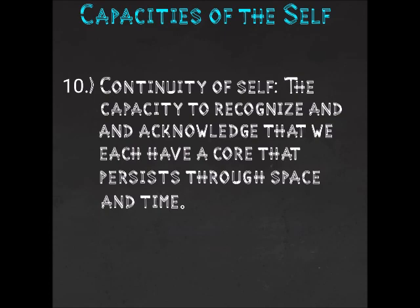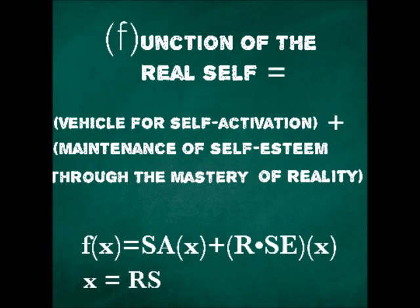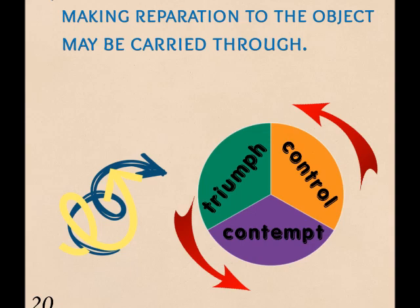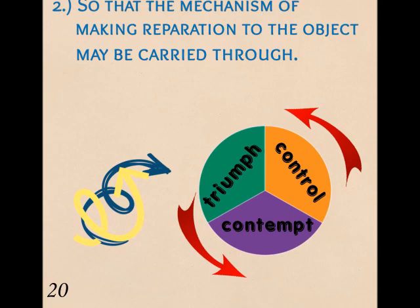Because the narcissist or borderline is neither whole nor autonomous, and developmentally arrested, the capacities of the self are significantly impaired. Furthermore, to activate such mature responses basically terrifies them to the point of defense in the triad, where self-activation leads to defense against separation anxiety and abandonment depression. It's exactly what happens in the depressive position to the infant — manic defenses go up, all in effort to avoid painful depressive anxieties.